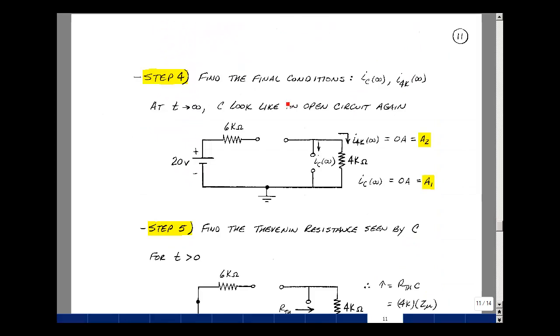Step four is to find the final conditions of our variables, I sub c and I of 4k, as t approaches infinity. The capacitor looks like an open circuit in the DC circuit if you wait long enough. The current in this capacitor is zero, and that's going to be A1. There's no current here. This is also equal to zero, and that's going to be equal to A2.